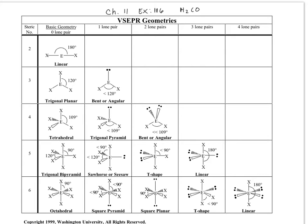This hint is to help you with Chapter 11, Exercise 116. What's asked in this problem is you need to determine your molecular geometry. To determine the molecular geometry of a compound, you're going to use what we call the VSEPR model. VSEPR stands for Valence Shell Electron Pair Repulsion theory.